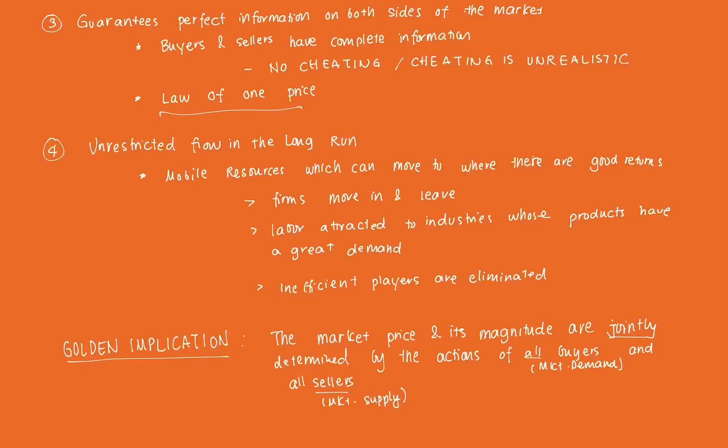From a micro labor standpoint, labor — as an input in production — will be attracted to industries whose products are in great demand because that gives greater returns. Additionally, inefficient firms are eliminated from the market and replaced by efficient ones. If a firm isn't doing well even when the aggregate market is healthy, it is free to exit the market, because inefficient firms have no incentive to stay and will opt to move to another market with a potentially higher return.